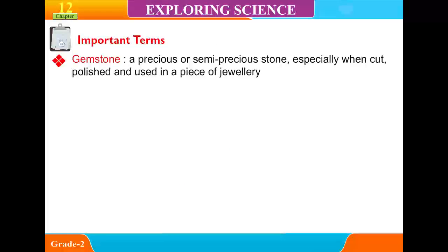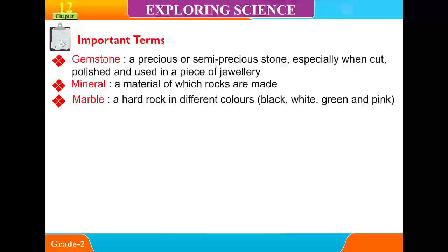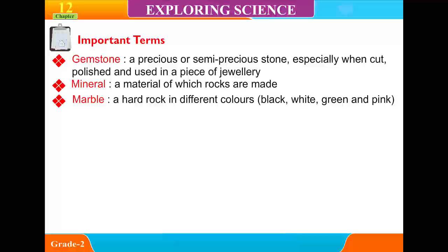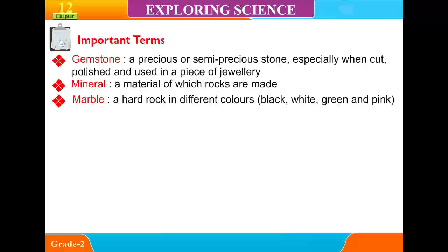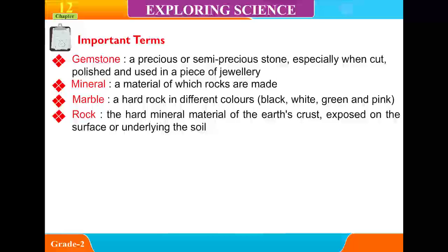Gemstone: a precious or semi-precious stone, especially when cut, polished, and used in a piece of jewelry. Mineral: a material of which rocks are made. Marble: a hard rock in different colors — black, white, green, and pink. Rocks: the hard mineral material of the earth's crust, exposed on the surface or underlying the soil.